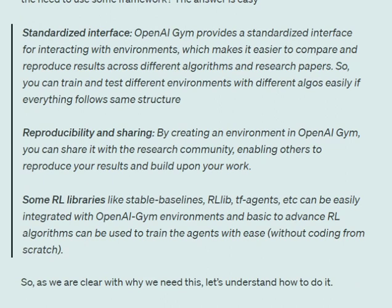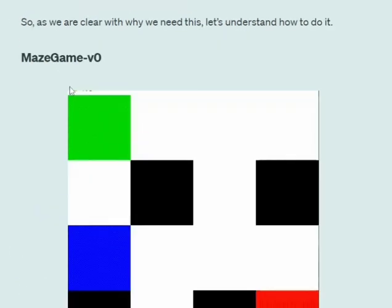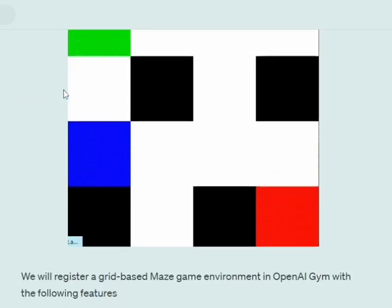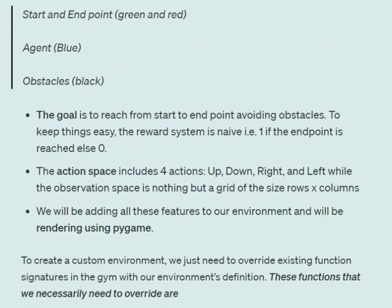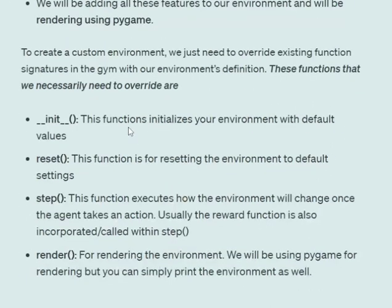Let's get started. The game we're creating is a maze game registered as MazeGame-v0. It's a grid game where the hero starts from the green panel and needs to reach the red panel. The blue square represents the agent's movement, and black squares are obstacles. The reward system is simple: a reward of one when the agent reaches the end point, else zero. The action space includes four actions: up, down, right, and left. We'll use Pygame to render this environment.